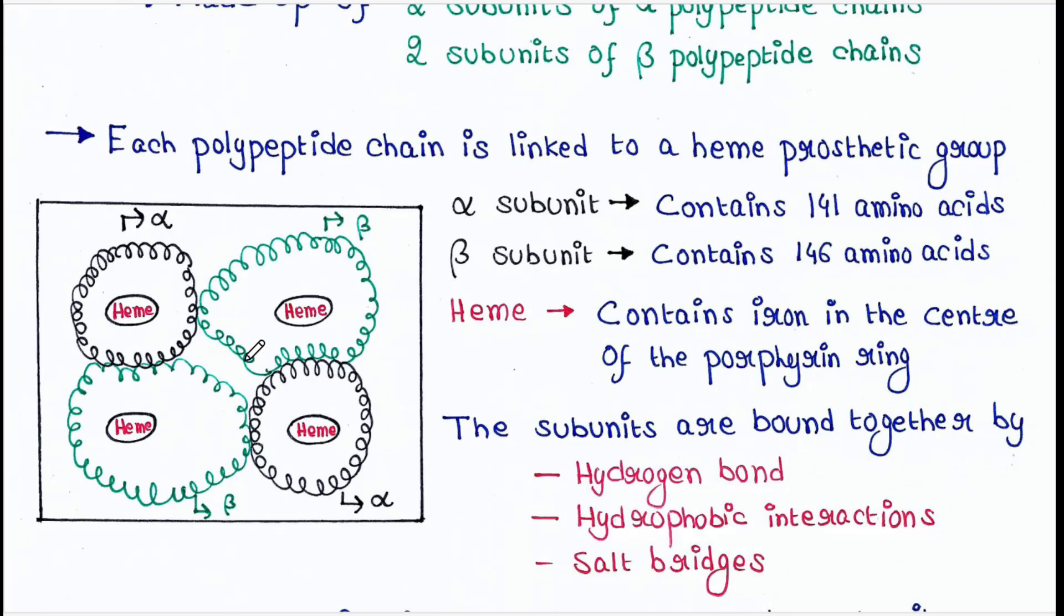Each polypeptide chain is linked to a heme prosthetic group. The alpha subunit contains 141 amino acids, and the beta subunit contains 146 amino acids.